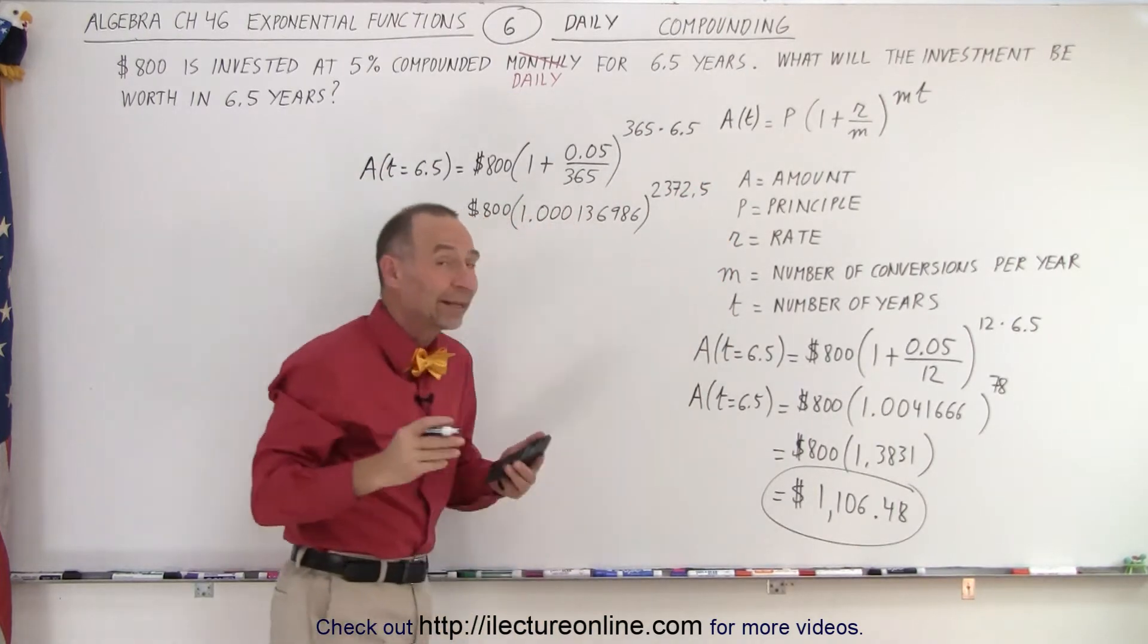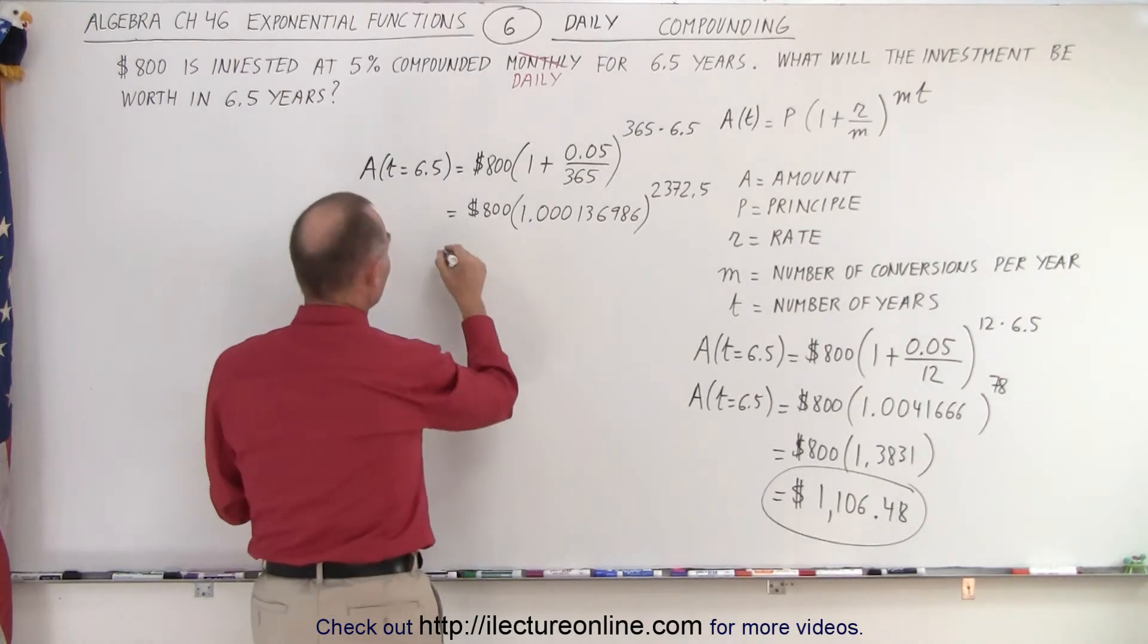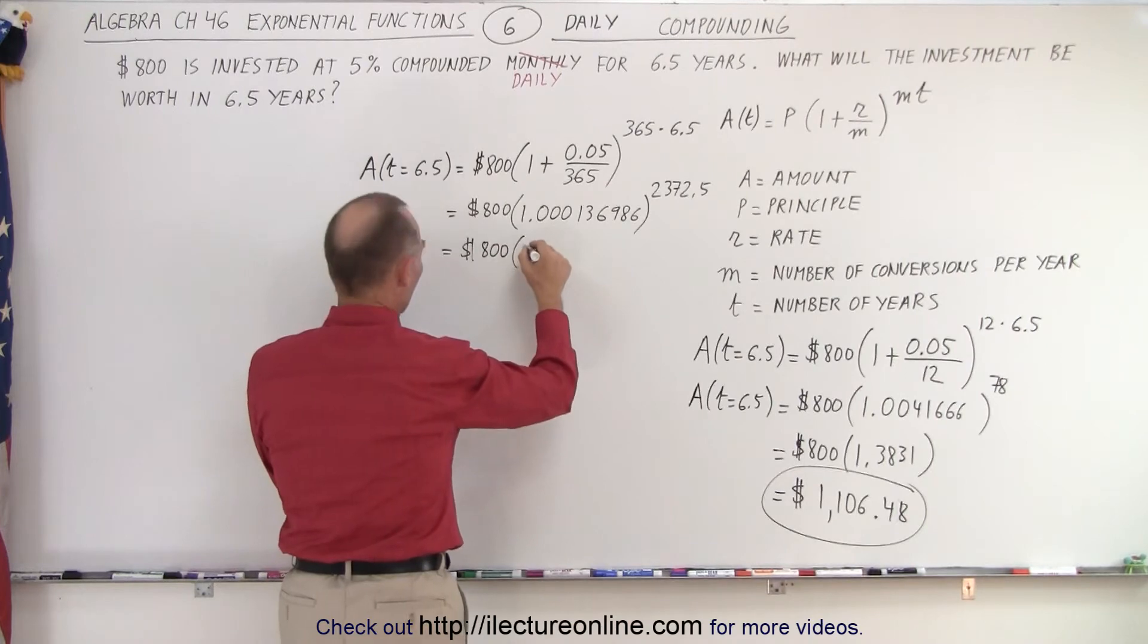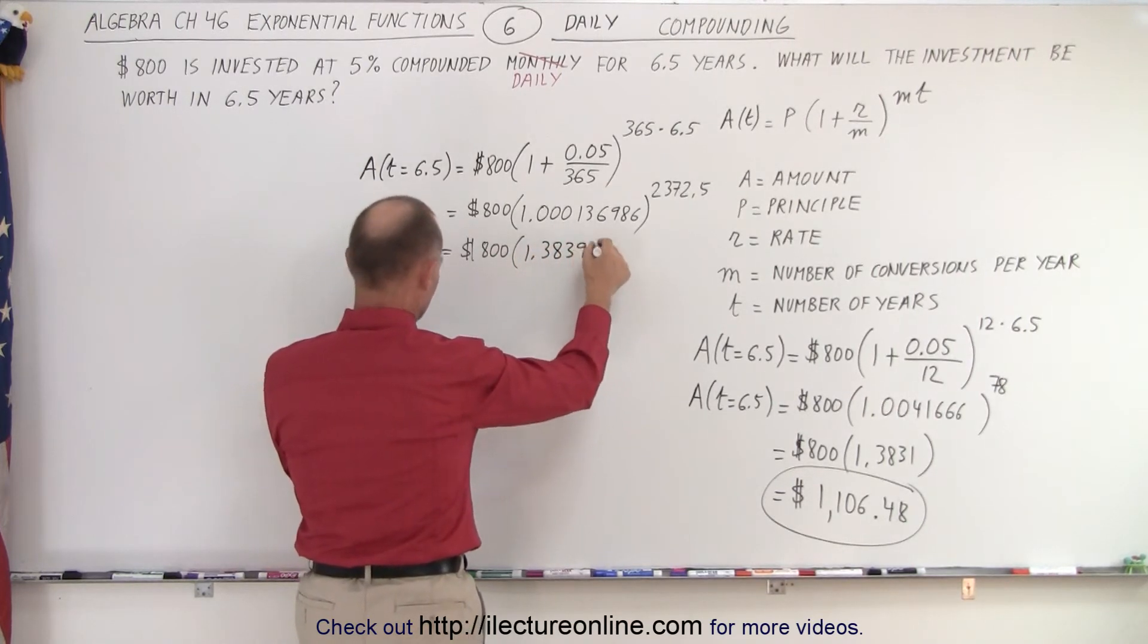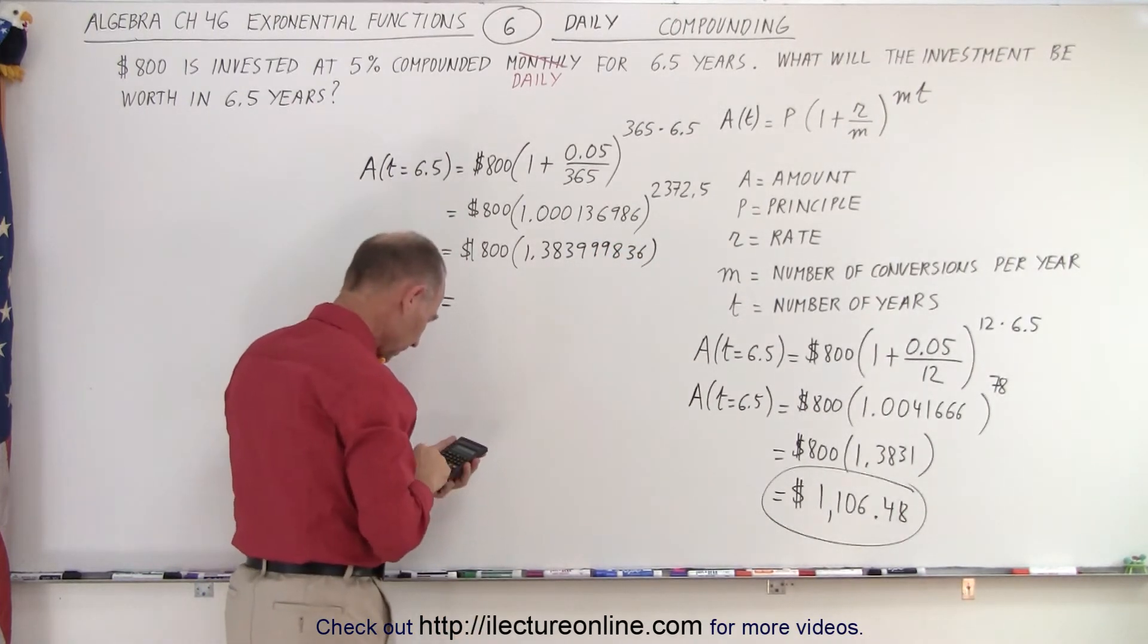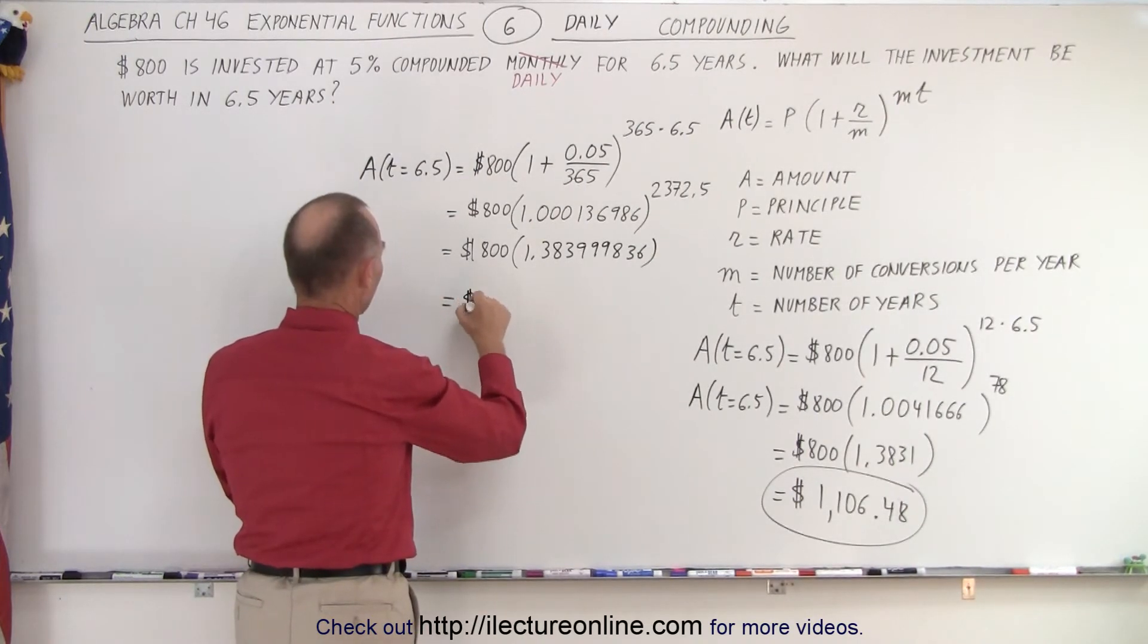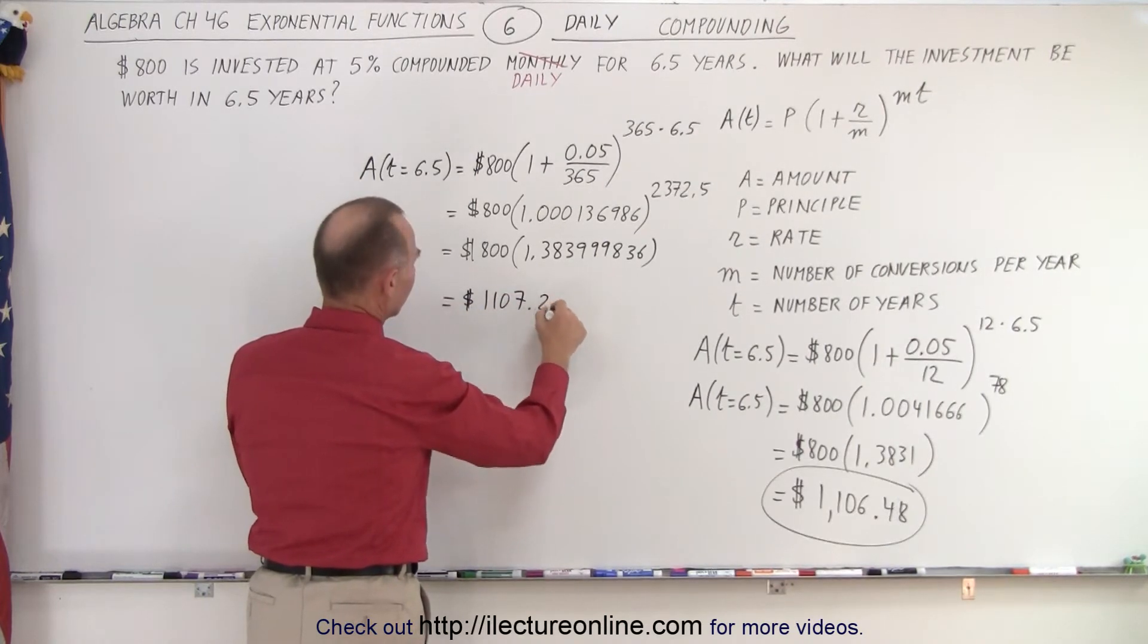Obviously, without a calculator, you would have trouble doing that one. Okay, so when we do that, we get this is equal to $800 times 1.383999836, and so that will then be equal to, I should put a dollar sign, $1,107.20.